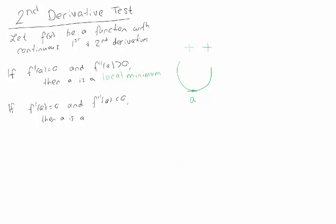So if you have a critical point and you plug it into the second derivative and get a positive number, that critical point has to be a local minimum. In the other case, if the second derivative is negative, that means we're concave down, and the critical point on a concave down section is a local maximum. So if you plug a critical point into the second derivative and get something negative, that critical point has to be a local maximum.